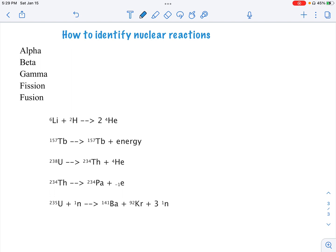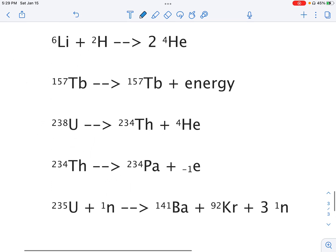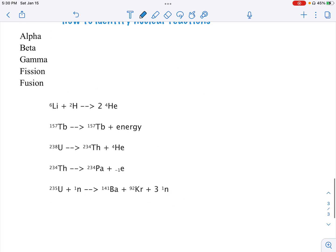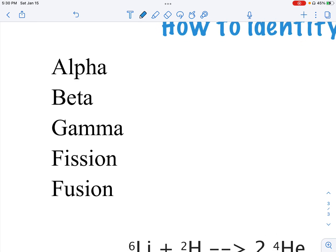This video is simply on identifying. So if you're given one or a group of reactions, how are you going to differentiate between the types of reactions? We have to remember we have alpha, beta, gamma, fission, fusion.